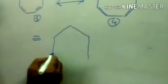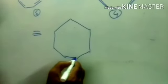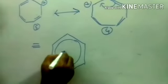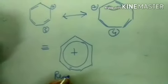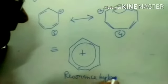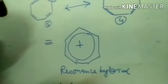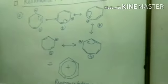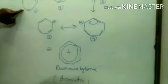Here are 5 resonating structures; all are equivalent resonating structures. So they contribute very effectively to the resonance hybrid. All 5 resonating structures are equally effective and contribute equally to the resonance hybrid, so this system is very stable.